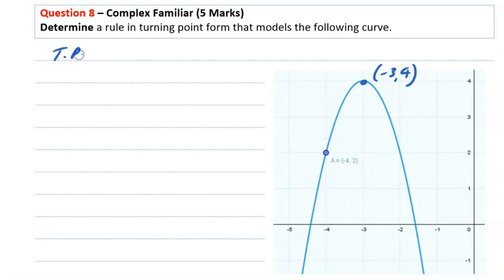So the turning point, which is our h and k value, is negative 3 comma 4.